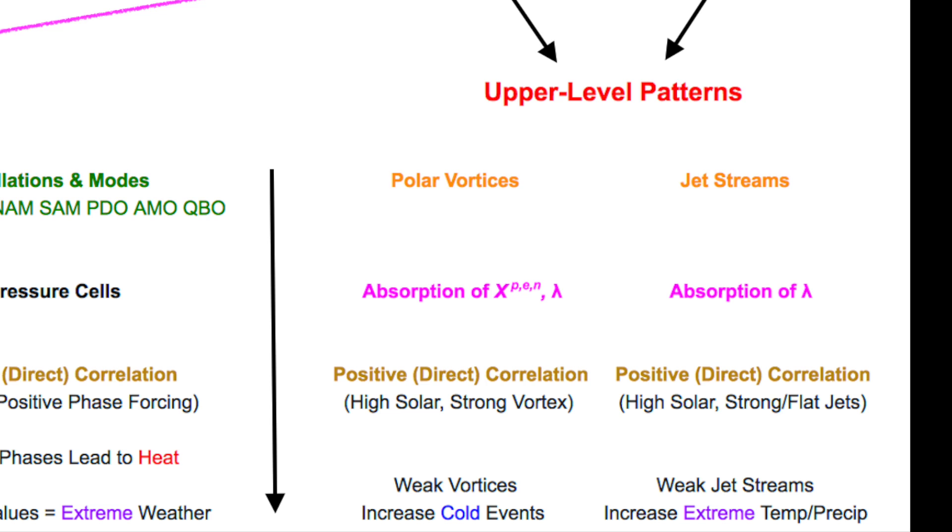High solar activity strengthens both sets of jets, while low activity weakens them. It's that weak activity in the polar vortices that increases cold events in the wintertime, while the weakness in the jet streams brings more wild weather, like the omega block phenomenon.